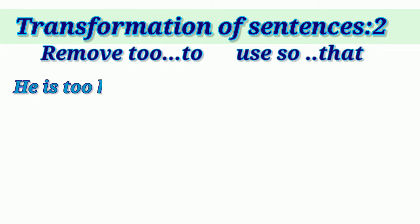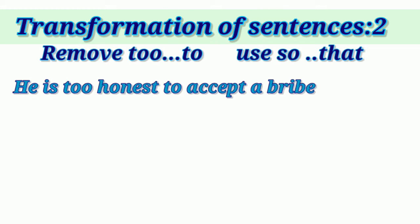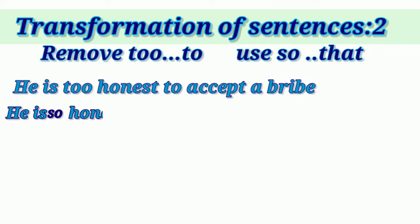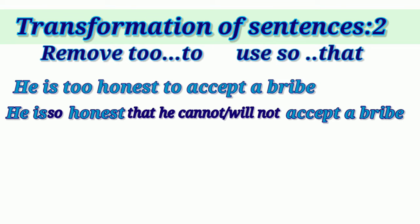Next example: 'He is too honest to accept a bribe.' The subject is 'he,' so we can use it twice. 'Is' indicates the sentence is in present tense. The answer is: 'He is so honest that he cannot — or will not — accept a bribe.' Since the sentence is in present tense, ideally we write 'cannot.' 'Will not' shows his unwillingness to accept a bribe.